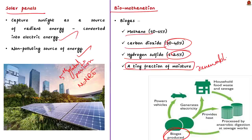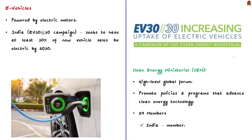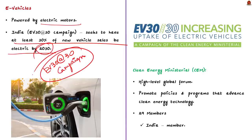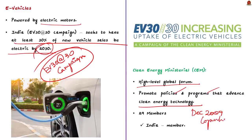The fourth project is electric vehicles. EVs are powered by electric motors as opposed to internal combustion engines. India seeks to have at least 30% of new vehicle sales be electric by 2030, in support of the EV30@30 campaign of the Clean Energy Ministerial. The CEM is a high-level global forum established in December 2009 at the UNFCCC COP in Copenhagen to promote clean energy technology. It currently has 29 member countries, including India.